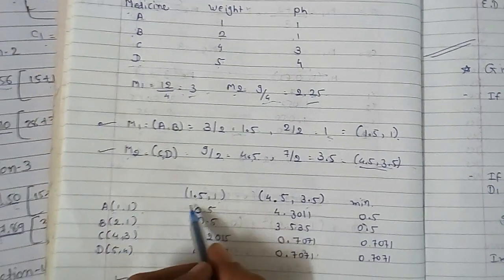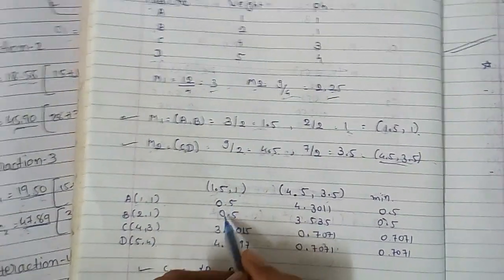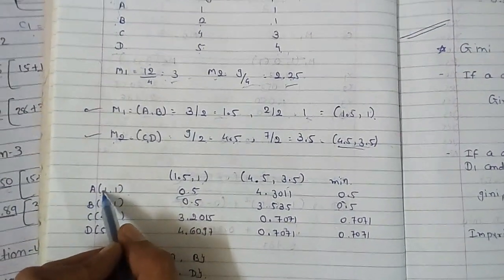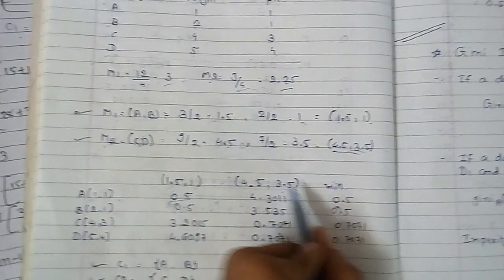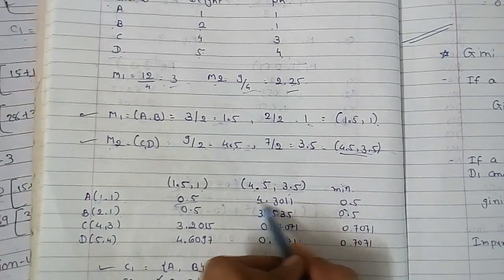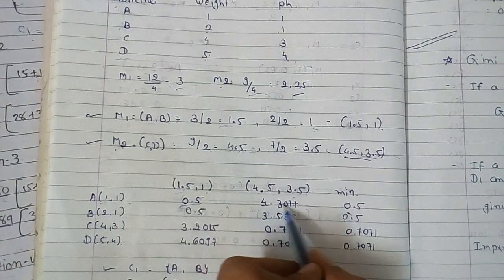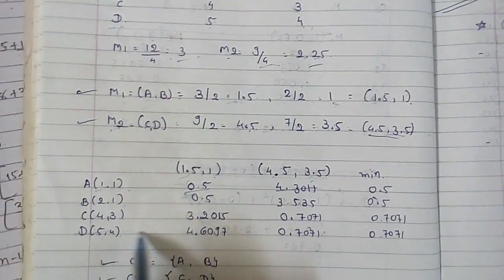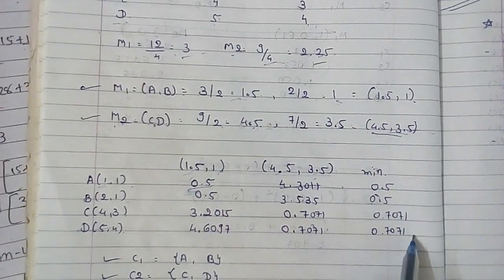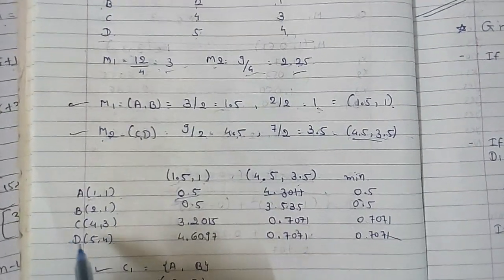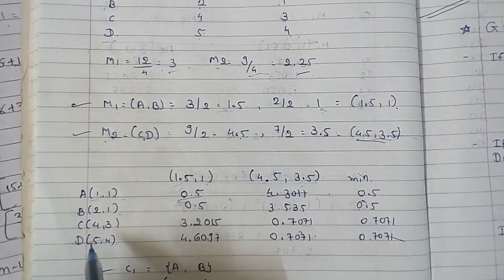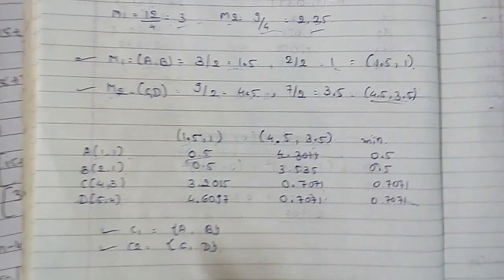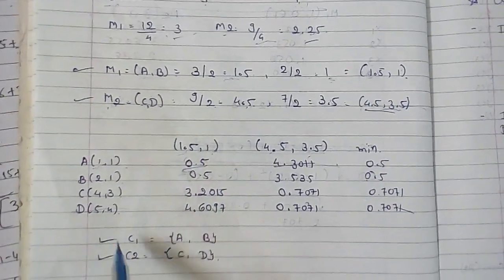Now find out the Euclidean distance between 1,1 and 1.5,1, so you will get 0.5. And find out distance between 1,1 and 4.5, 3.5, so you will get 4.3012. Now find out Euclidean distance between all the data. How to find out the distance I have already taught you in previous videos, so you can refer that.